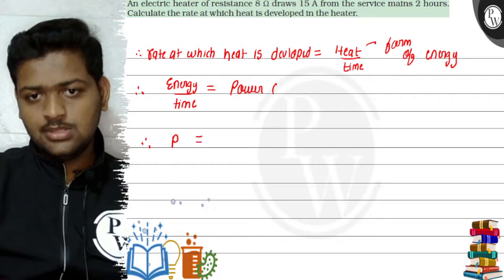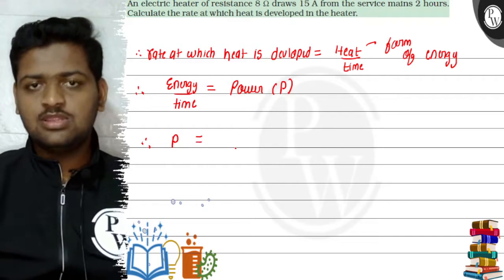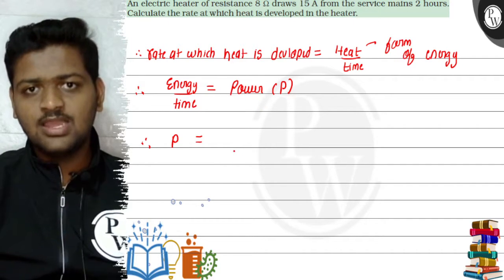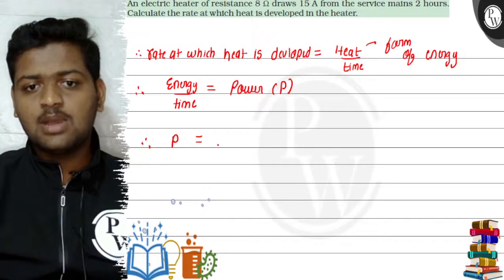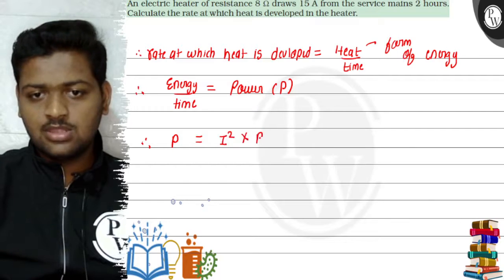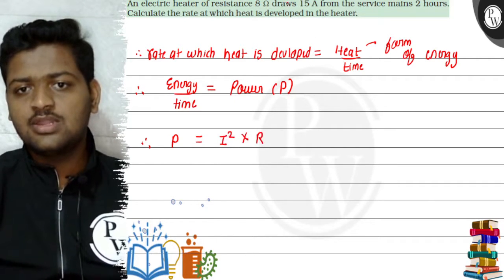Okay, so we will simply derive electrical power. Now there are three basic formulas of power. That is power is equal to voltage into current, that is V into I. But we will use the another formula that says power is equals to I square, current square, into resistance. Why will we use this formula? Because we have current and resistance given in this question, right?